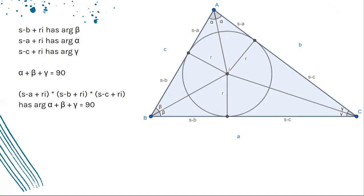Let's think about where else α + β + γ is. Remember that when you multiply complex numbers you add their arguments? Well that means that (S - A + Ri) × (S - B + Ri) × (S - C + Ri) has an argument of α + β + γ, which is just 90.